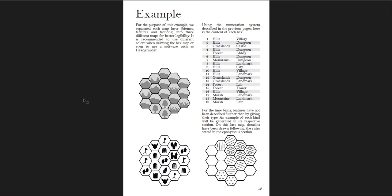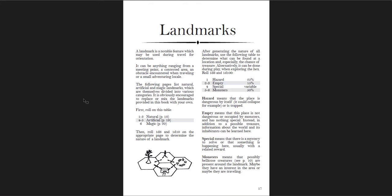There are rules for random encounters and what kinds you could have in a wilderness hex. Then you get an example of the biomes, locations on top, and faction power zones. Then you get landmarks — 1 through 3 on the d6 were landmarks. There are natural landmarks, artificial landmarks, and magical landmarks. You roll to generate them and then can roll to see what's actually in each landmark — is it a hazard, is it empty, is it special, or are there monsters?